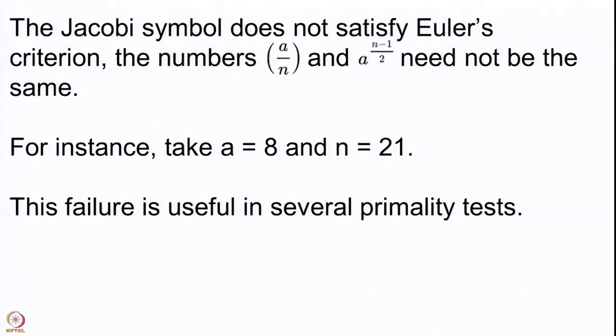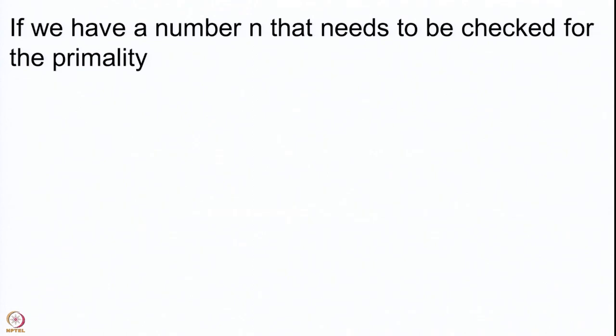However, mathematicians have a knack of turning failures into very useful things. This failure of Euler's criterion for the Jacobi symbol can be used very effectively when doing primality tests — it may in fact be called the basis of several primality tests. Suppose you have a large number n and you want to know whether it is prime — you want to check the primality of n.